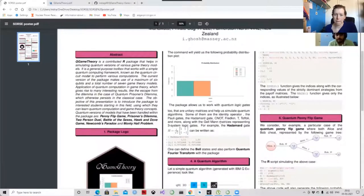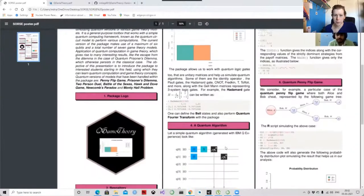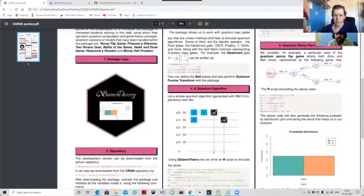You can also work with quantum gates called Hadamard gate, C-NOT gate, Fredkin gate, and so on. Or even Gell-Mann matrices. You can work with Bell states. You can also perform quantum Fourier transform with this package.